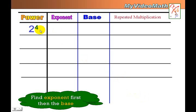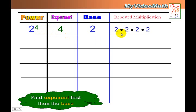In a power, we want to identify the exponent and the base and know how to represent it in repeated multiplication. Find the exponent first, then the base. The exponent of this power is 4 and the base is 2, so repeated multiplication is 2 times 2 times 2 times 2, because all the numbers multiplied together equal 16. That is the value of 2 to the fourth power.